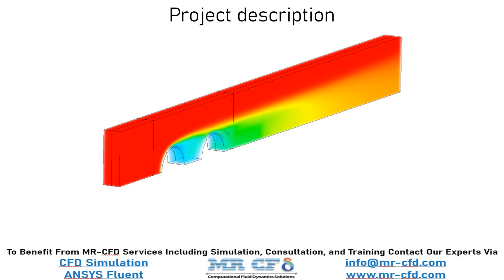The energy equation is activated to obtain temperature distribution inside the computational domain. Since the shear stress resulting from fluid movement on the surface of the heat exchanger is very important, the SST k-omega model is used to solve turbulent flow equations, and the ideal gas model has been used to determine density changes in proportion to temperature.